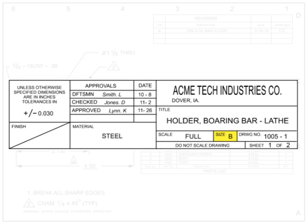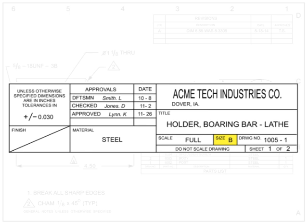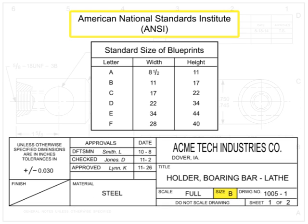The size of the drawing indicates what size paper the drawing should be printed on to be true to scale. There are many different types of drawing size standards, but the most commonly used in the United States is the American National Standards Institute, ANSI, which is also required by the ASME Y14 drawing standard.